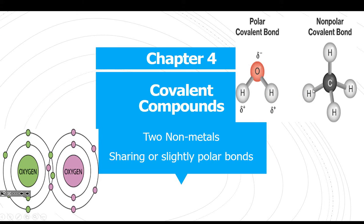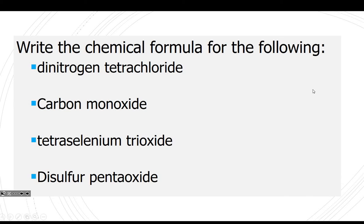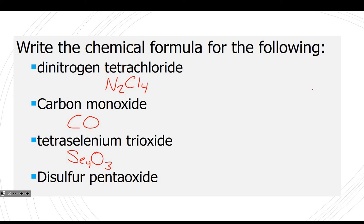On to Chapter 4 — covalent bonding. Covalent bonding is sharing. We're going to write chemical formulas: dinitrogen tetrachloride is N2Cl4; carbon monoxide is CO — mono meaning one; tetra selenium trioxide is Se4O3; disulfur pentoxide is S2O5. The prefix tells you how many of each element.